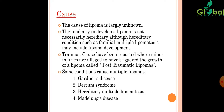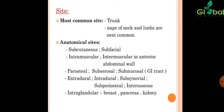The most common site of Lipoma is the trunk; the nape of the neck and limbs are next common. Anatomical sites include subcutaneous, subfascial, intramuscular, intermuscular in the anterior abdominal wall, parosteal, subserosal, submucosal, extradural, intradural, subsynovial, intraglandular, breast, pancreas, and kidney.